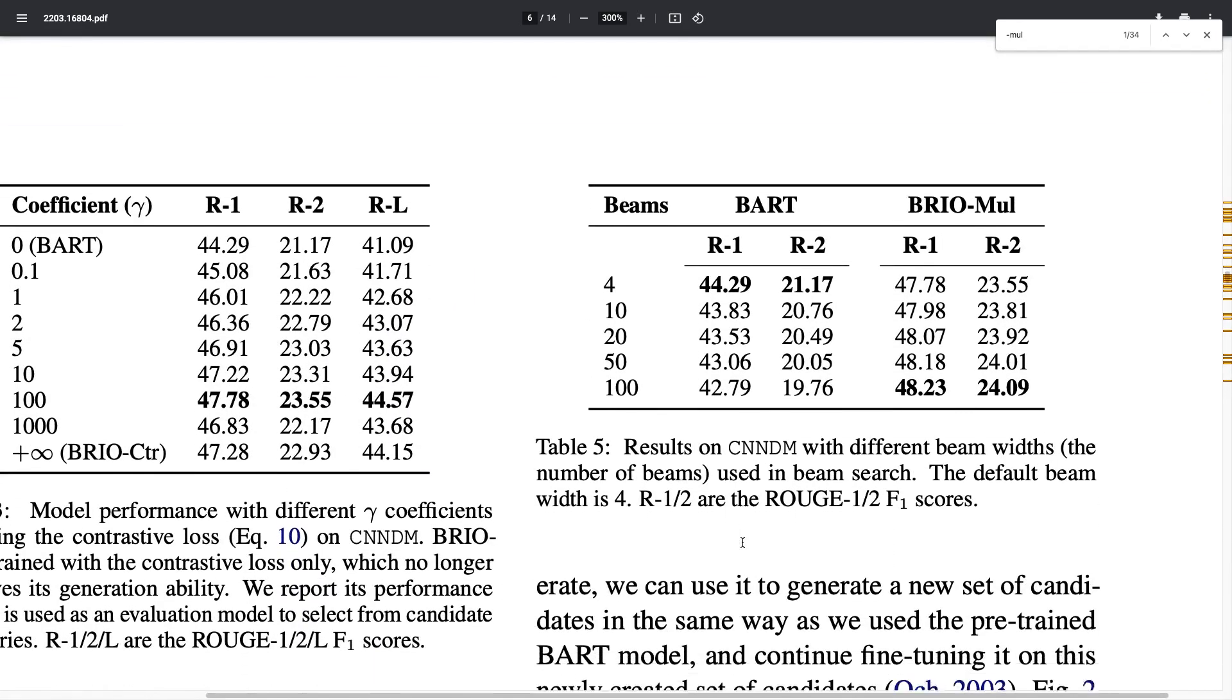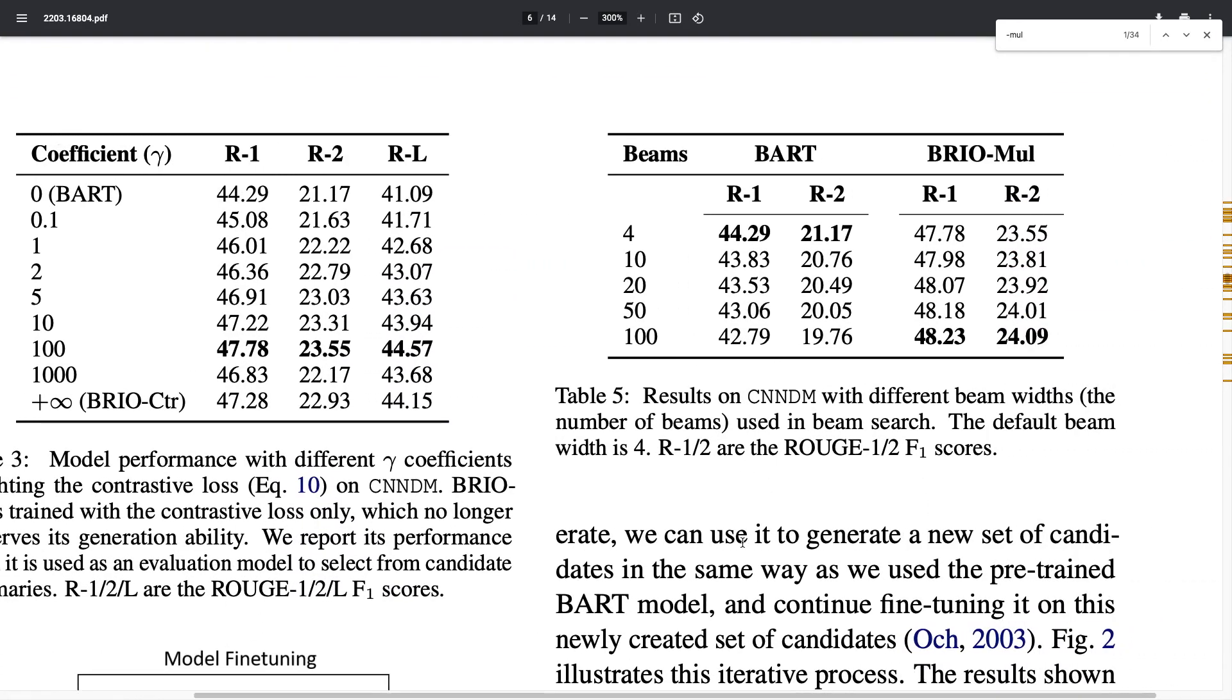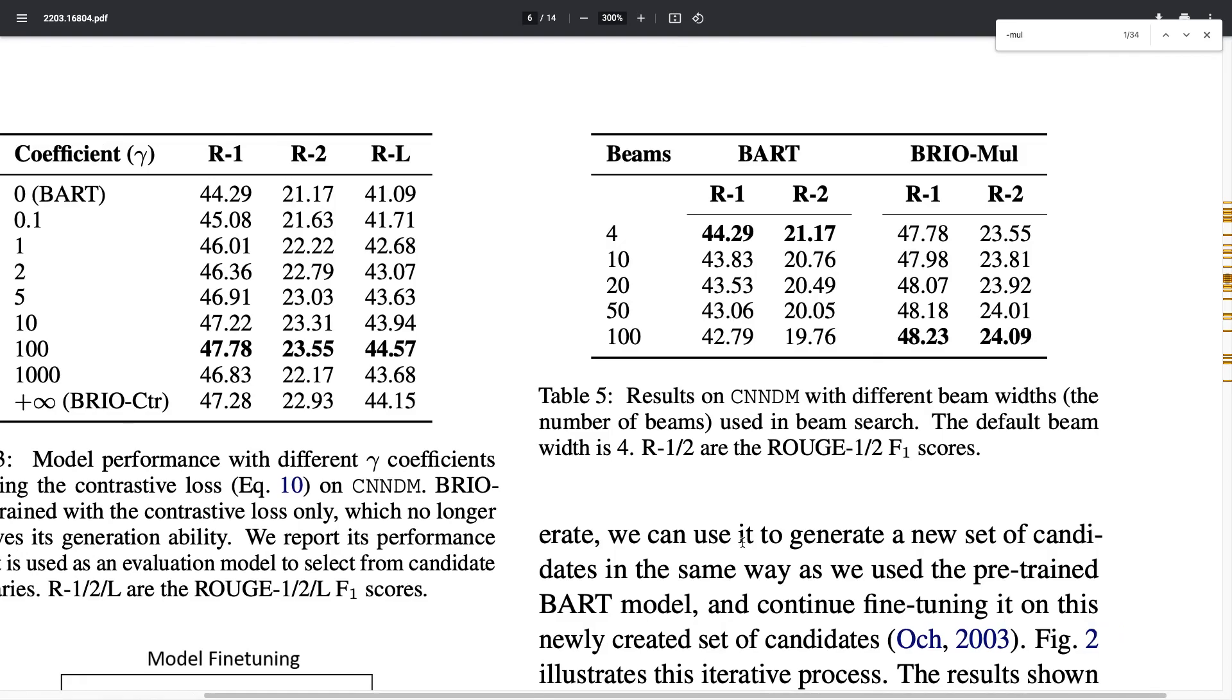This new training paradigm is highly effective and leads to output summaries that are more diverse. This is evident from this table, where we see that the BART model with beam search doesn't improve when you increase the beam size. Going from beam size 4 to 10, 20, 50, and 100, you get worse scores because the model generates more noise, leading to worse overall summaries produced in combination with the distributions from beam search.